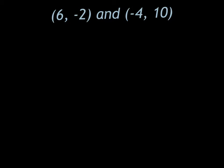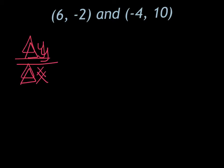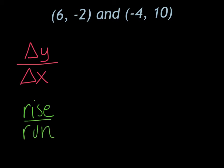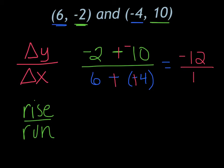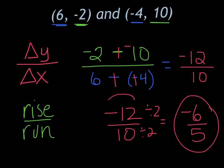I'd like you to try this one on your own — please push pause. When you're ready to watch the solution, push play. So I have two coordinates. Change in Y over change in X — that's the same as rise over run, just without a graph. My two Y coordinates are negative 2 and 10. So I do negative 2 minus 10, adding the opposite: I get negative 12. My X coordinates are 6 and negative 4, so 6 minus negative 4 — adding the opposite — 6 plus 4 is 10. My slope is negative 12 over 10. Simplifying by dividing by 2: negative 6 over 5. Either answer is correct.